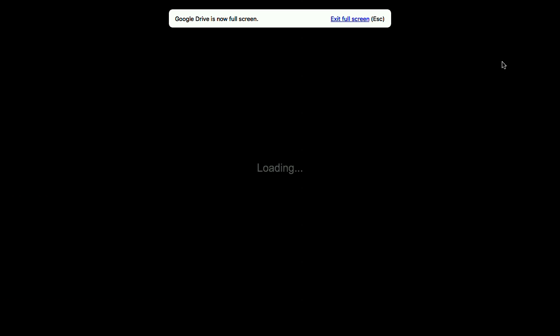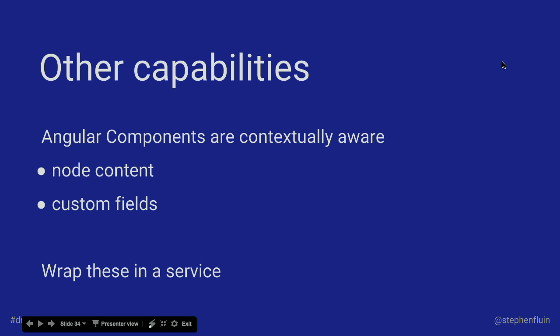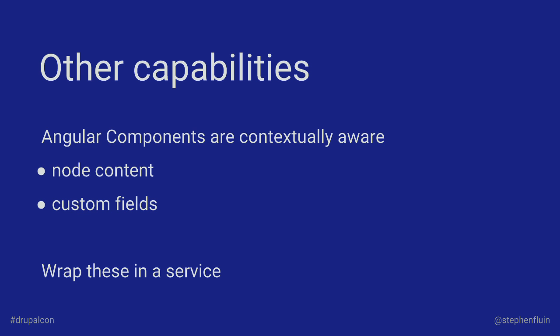Comparing the two approaches, one thing the progressively decoupled blocks has over the other is that it only loads the Angular framework if you have a block on the page requiring it. If you think about how we were doing it before, loading it globally no matter what, this is much better. The other benefit of this approach is that all of the components are contextually aware — so Drupal parameters, variables, fields, all of those things are accessible via a Drupal object within JavaScript. We recommend you wrap those things in a service so they're easier to mock out if you're building testability in your application.